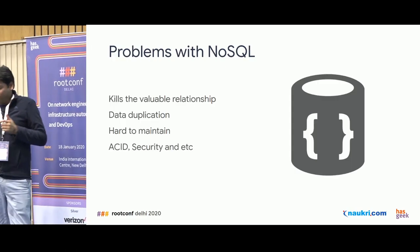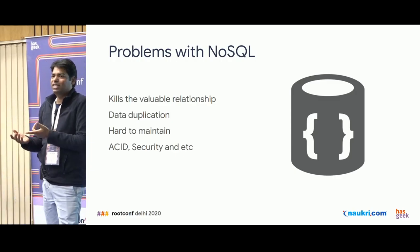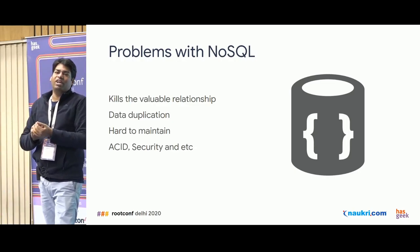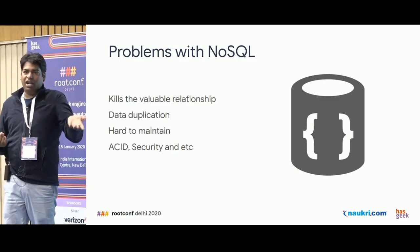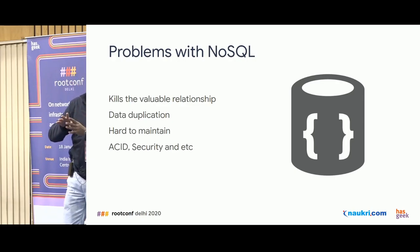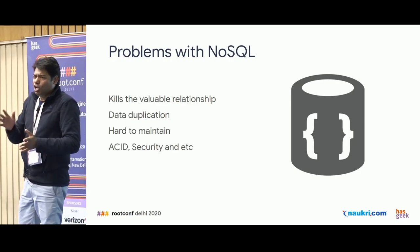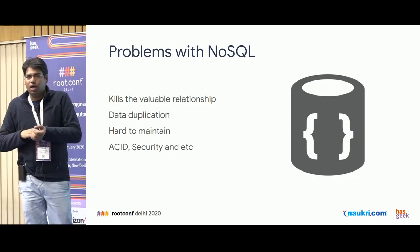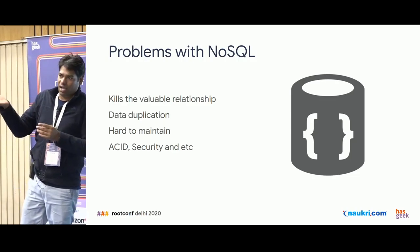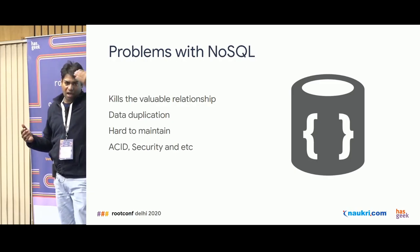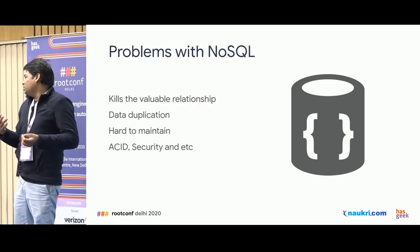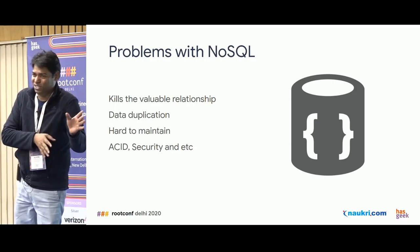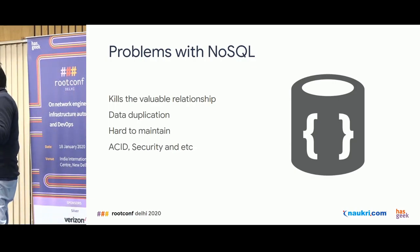The actual problems with NoSQL are that it kills relationships — we cannot maintain relationships the way we can in RDBMS. If your data has no relationships, NoSQL can be helpful. But we still need data duplication in NoSQL, as we saw with the director information being copied into every movie document. And challenges around ACID, security, and other things from traditional databases are still present in NoSQL as well.